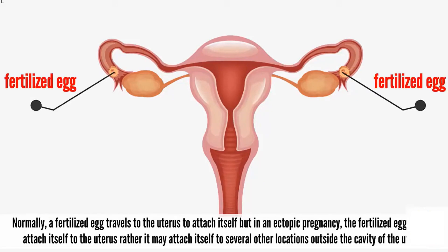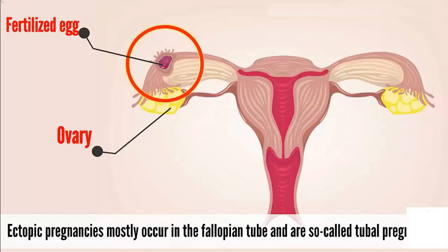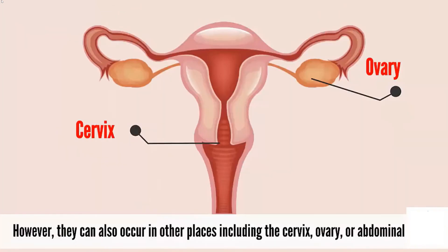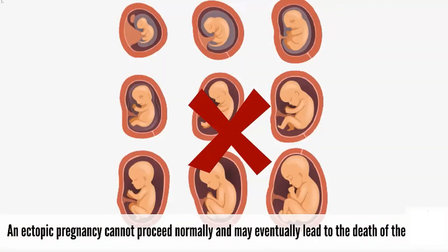Rather, it may attach itself to several other locations outside the cavity of the uterus. Ectopic pregnancies mostly occur in the fallopian tube and are called tubal pregnancy. However, they can also occur in other places including the cervix, ovary, or abdominal cavity. An ectopic pregnancy cannot proceed normally and may eventually lead to the death of the embryo.